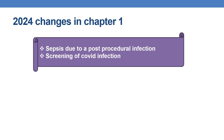Now, coming to the overall changes in Chapter 1, the changes took place mainly in two topics: one is sepsis and the next is COVID infection. In sepsis, there is a revision in sepsis due to post-procedural infection, and in COVID infection, there is a revision in screening of COVID infection.